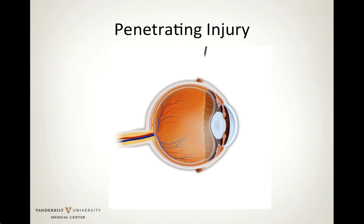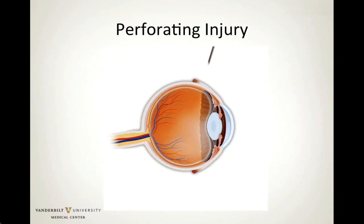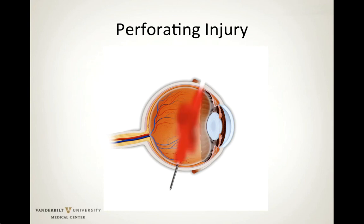In penetrating injuries, there is a disruption in the eye wall with an entrance wound but no exit wound. In perforating injuries, there are two breaks in the eye wall — both an entrance wound and an exit wound.